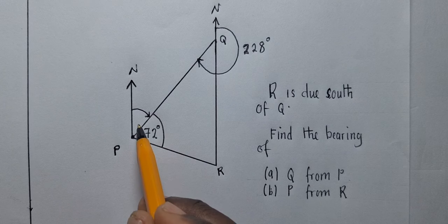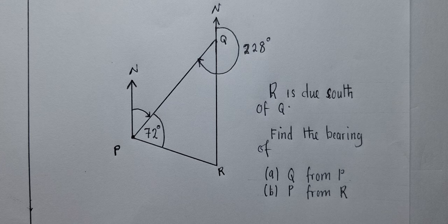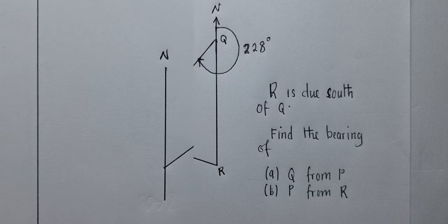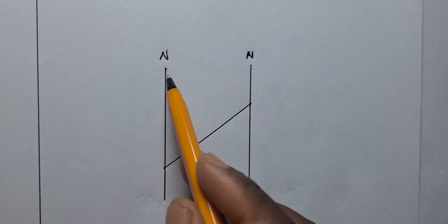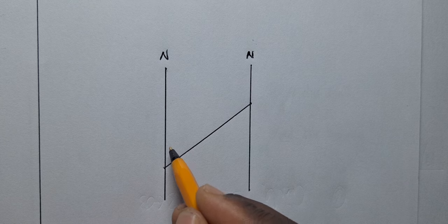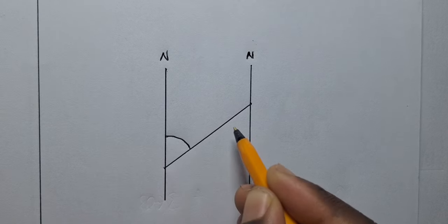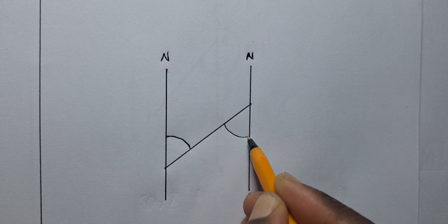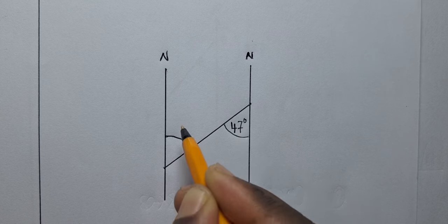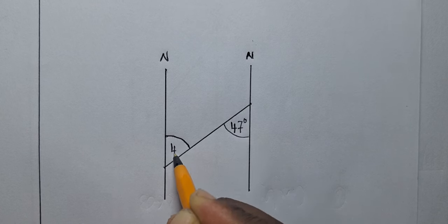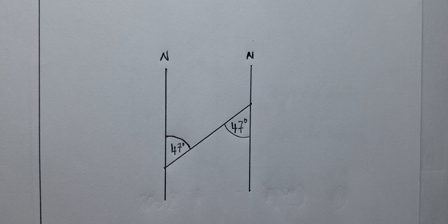So now how do we get to find this bearing? There is a property we need to use. So let's look at the property and understand what it's supposed to do. We really need this property over here. You can see this is north and north. So meaning the angle which is right here or the bearing at this point must be equal to this angle. So if this is 47 degrees then this is also 47 degrees.